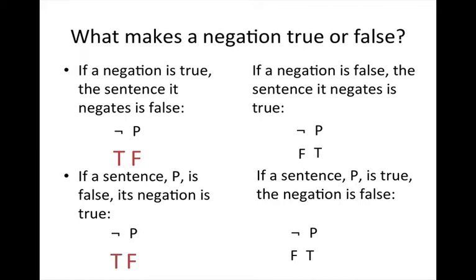Now let's look at the upper right quadrant of our slide. If a negation is false, the sentence it negates is true. Another way we can look at this is: if a sentence P is true, its negation is false. Basically, what negation does is assert the opposite truth value of the sentence it negates.